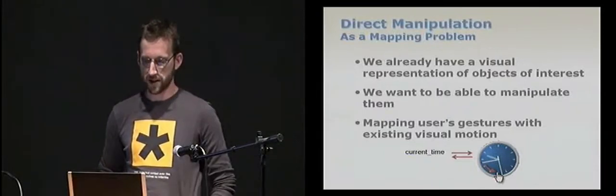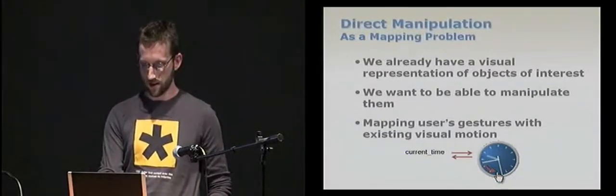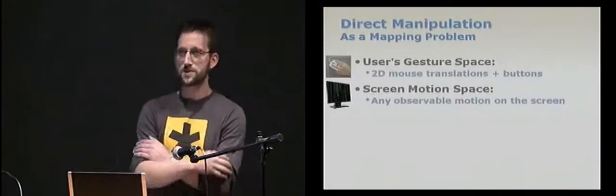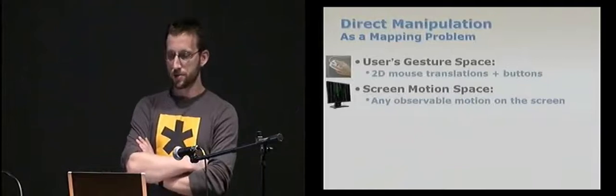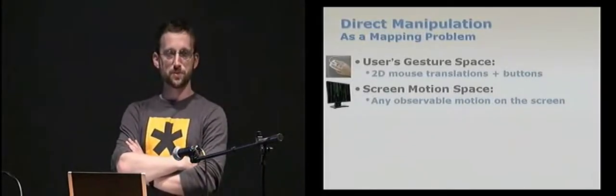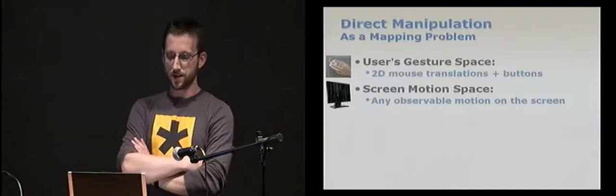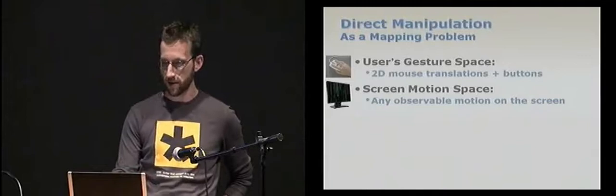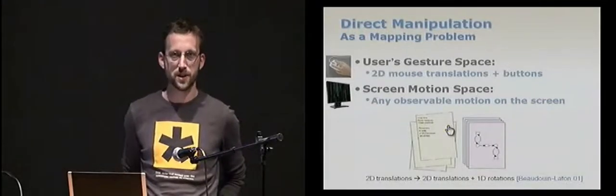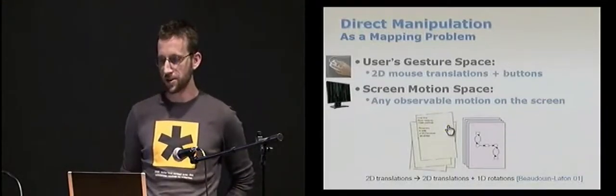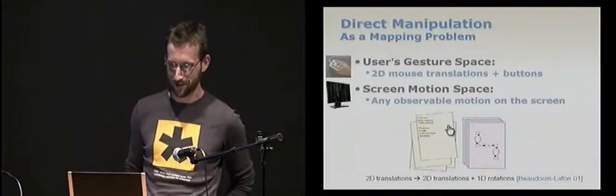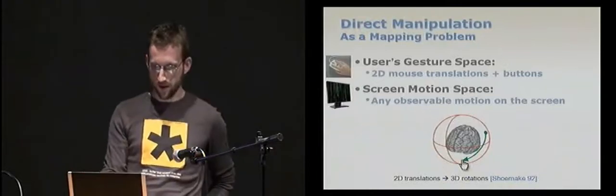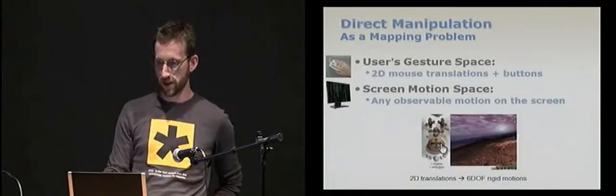And this actually requires to find the best mapping between all possible user gestures and all possible visual motions. So here, these are rotations of the clock handles. So the problem is that if we assume a mouse-based computer, the set of possible gestures is much smaller than the set of possible motions on the screen. And lots of interaction techniques are actually converting gestures into motions of a different type. For example, converting 2D translations of the mouse into a combination of translation and rotation, or into 3D rotations, or into any transformation you can think about.